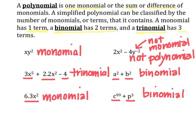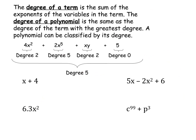So we looked at monomials, binomials, and trinomials, which are all polynomials. Now we're going to talk about the degree of a term. The degree of a term is the sum of the exponents of the variables in the term. The degree of a polynomial is the same as the degree of the term with the greatest degree. A polynomial can be classified by its degree.